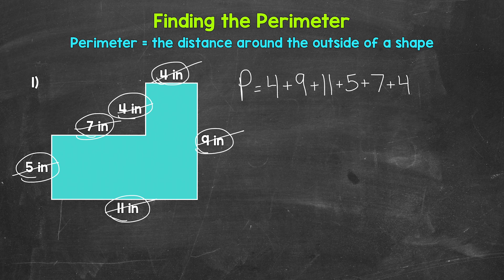That's all of the side lengths. And now we can add. So four plus nine is 13, plus 11 is 24, plus five is 29, plus seven is 36, plus four is 40. And this is inches. So that's our perimeter, 40 inches.